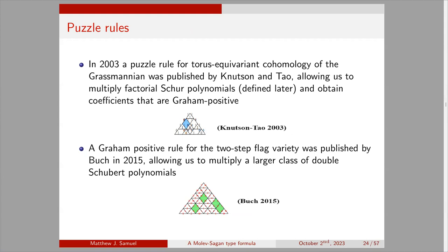There are also puzzle rules for equivariant cohomology. The first puzzle rule in 2003 was a rule for the torus-equivariant cohomology of the Grassmannian by Knutson and Tao, which allows multiplying factorial Schur polynomials to obtain Graham-positive coefficients. In 2015, Buch published a puzzle rule for the two-step flag variety, correspondingly allowing multiplication of double Schubert polynomials with at most two shared descents.